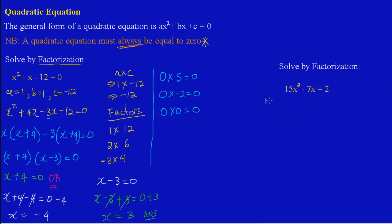I'm going to say 15x² - 7x, and I have a positive 2 so I'm going to change my positive sign to a negative — basically subtract 2 from both sides. So positive 2 minus 2: remember when you're transposing you do the opposite of what is happening. So now I have 15x² - 7x - 2, and a positive 2 will cancel out with a negative 2, so all of that is now equal to 0.